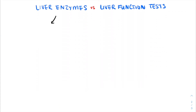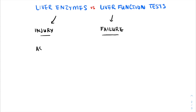Broadly we think about these tests in two main categories: liver injury versus liver failure. In an injury pattern, I think about the analogy of a punch to the liver. The liver is made of hepatocytes, and when hepatocytes are broken down, we might see the release of AST, ALT, or GGT. These would all be increased in the serum.